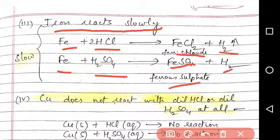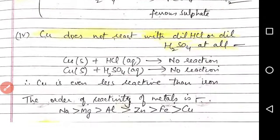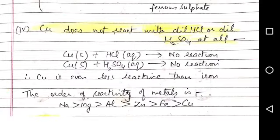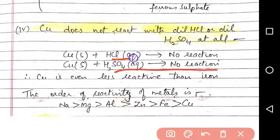Then comes copper. Copper does not react with dilute HCl or dilute H2SO4 at all. Cu + HCl gives no reaction. Copper is very least reactive, very less reactive than iron. So it does not react with any of the acid under any conditions.